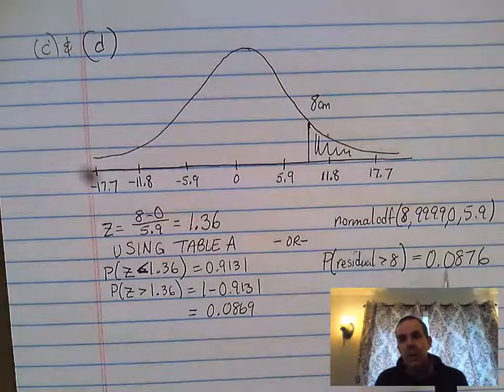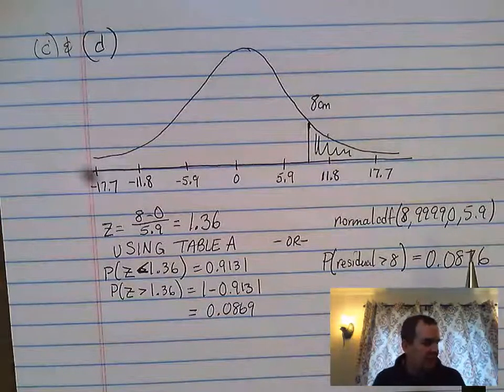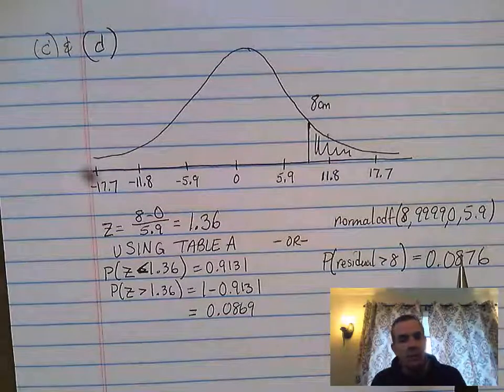The probability that the residual is greater than 8—and I would definitely make sure you put something down like this because it's speaking stats, not just throwing numbers down—is 0.0876. As you can see, both of those numbers are relatively close.